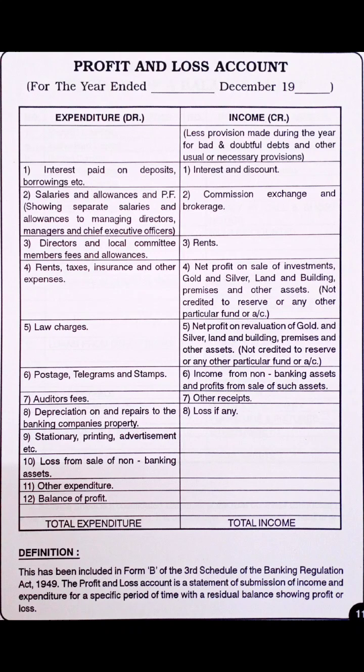This is drawn from Form B of the Third Schedule of the Banking Regulation Act 1949. The profit and loss account is a statement of submission of income and expenditure for a specific period of time, with the residual balance showing profit or loss. It is very simple — if it comes in the exam, score 5 on 5 by writing all the expenditure side and income side.